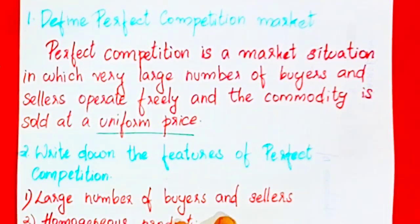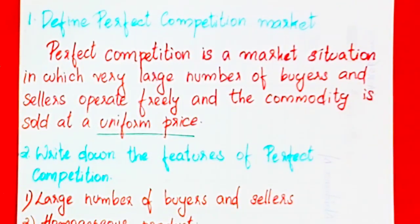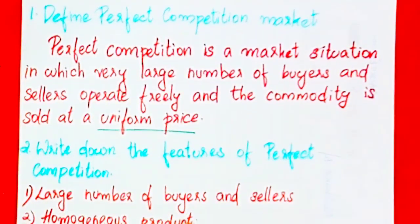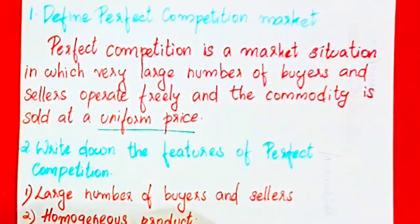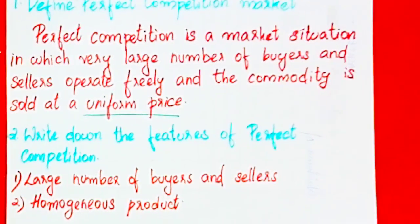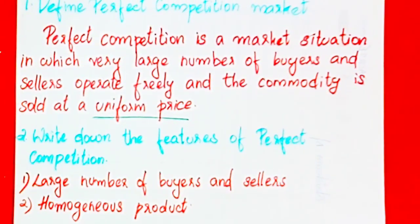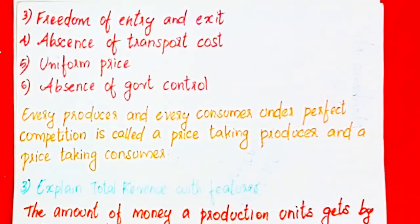The next topic is Features of the Perfect Competitive Market. There are 6 features. The first feature is: Large number of buyers and sellers. The second feature is: Homogeneous product. The third feature is: Freedom of Entry and Exit.